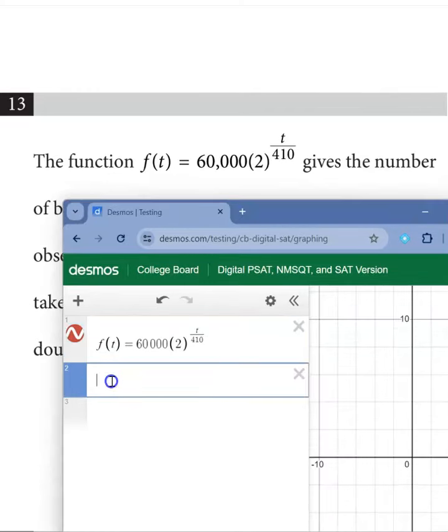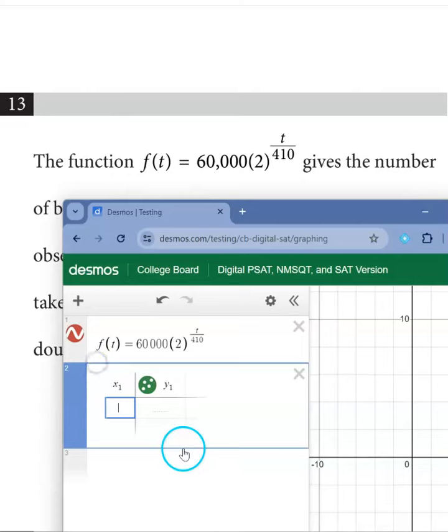Go to the second row. Click the plus sign. Click Table. Under X1 type 0 and replace Y1 with F of X1.